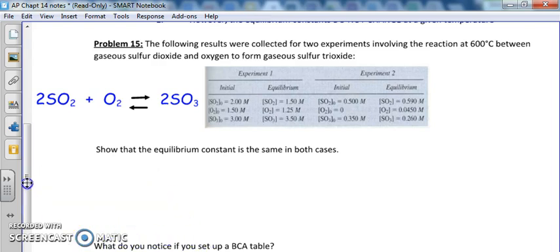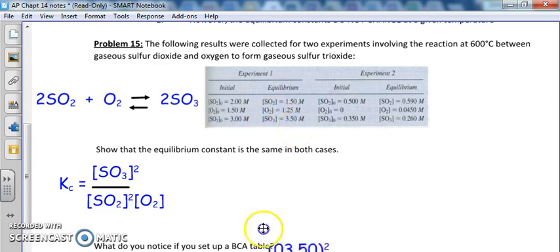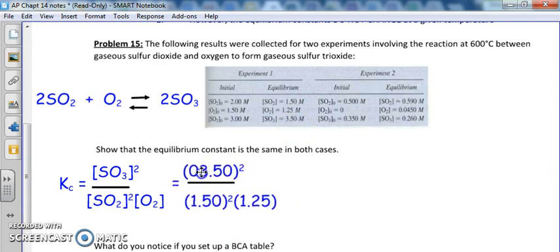So now I have the balanced equation. I can write my law of mass action. Hopefully you got this as a value. And now it's a matter of plugging in. Remember, we use the equilibrium concentrations in here. Not your initial, your equilibrium. So SO₃ is 3.5 and go from there. So here are my values. Take a second out and start plugging in those numbers. Hopefully you got this.